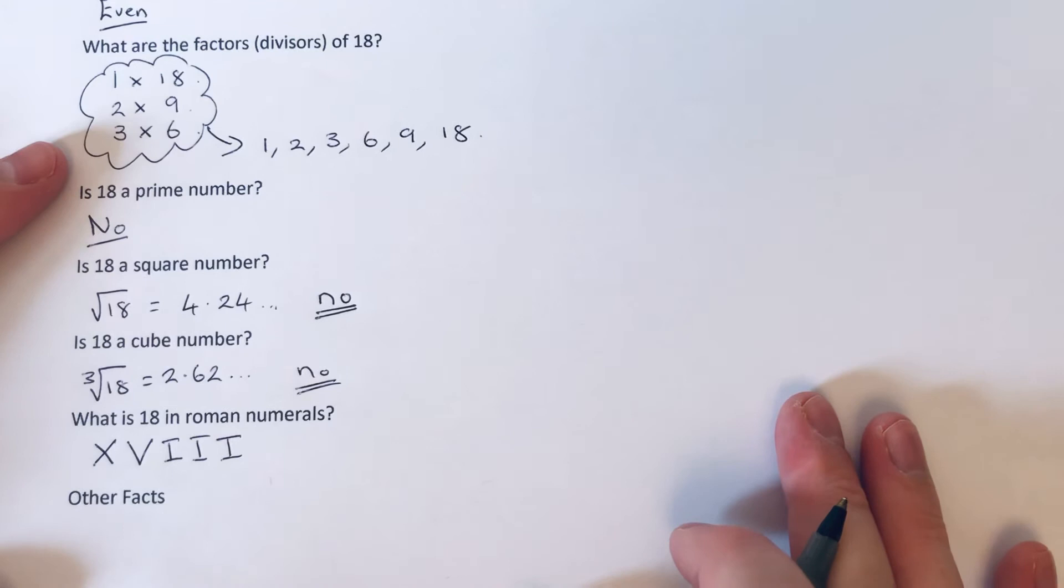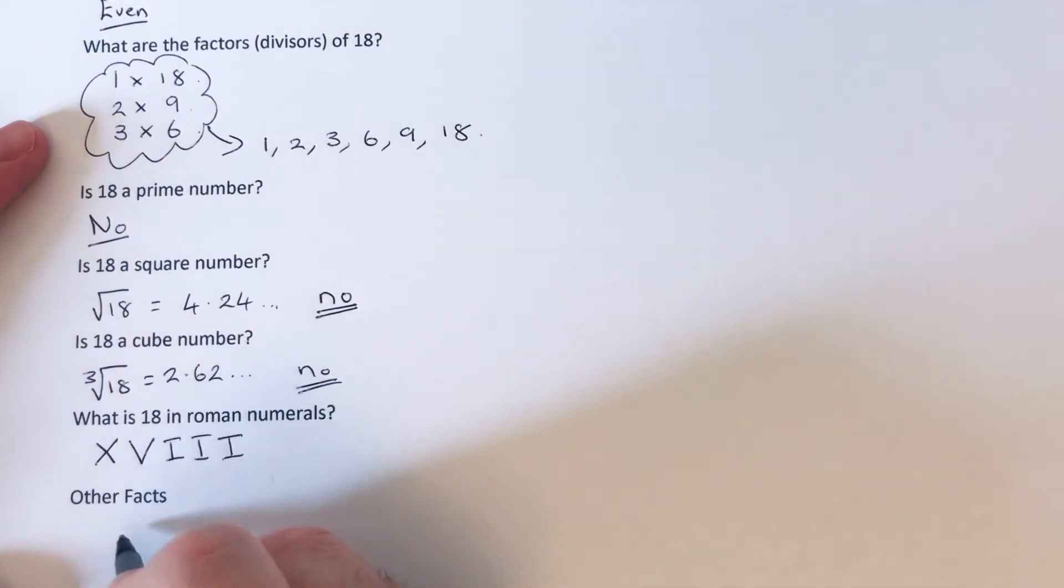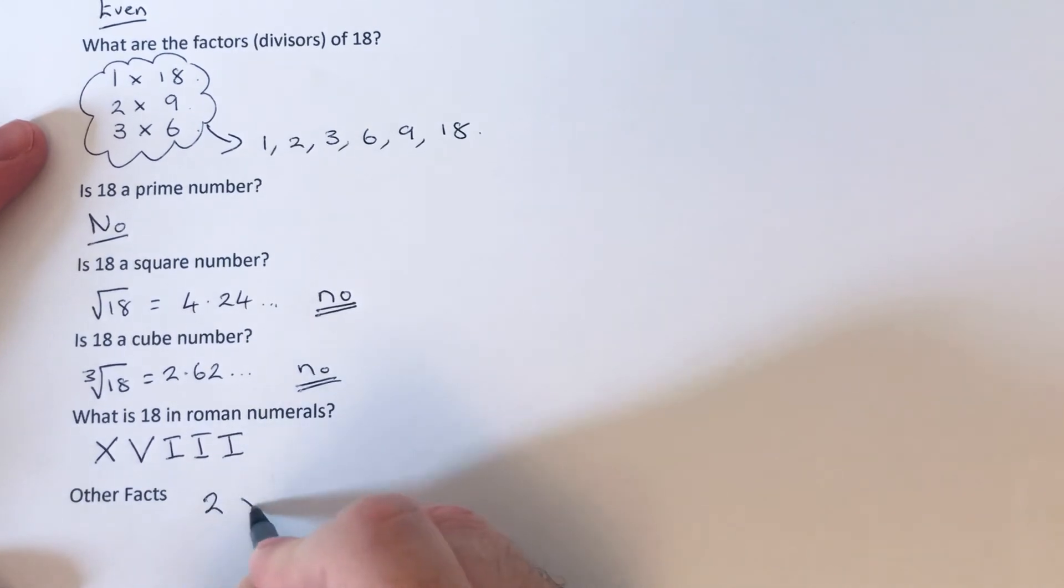What are the other facts of 18? Well, as a product of prime factors, we can write 18 as 2 times 3 times 3.